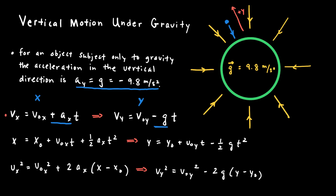In the second equation, instead of plus one-half ax·t², you see minus one-half g·t². And in the third, instead of plus 2ax(x − x_naught), you see minus 2g(y − y_naught). These slight changes help us remember that in the vertical y direction, the acceleration is always 9.8 meters per second squared directed downward. In the x direction, the object needs to provide its own acceleration, because there's nothing in the horizontal direction that will accelerate an object.